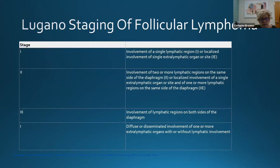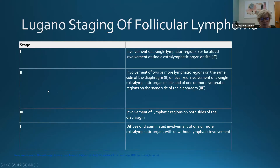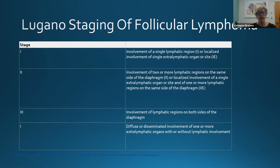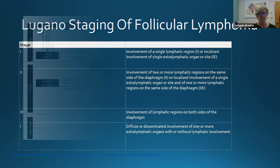The Lugano staging system is used for follicular lymphoma: stage 1 is a single region or single extranodal site; stage 2 is two or more regions; stage 3 involves both sides of the diaphragm; stage 4 involves extralymphatic organs. Prognosis worsens with each stage. Since follicular lymphoma almost always presents at stage 3 or 4, we think of it as a systemic disease and approach it with systemic rather than local therapies.